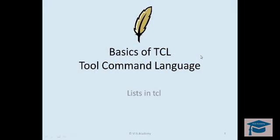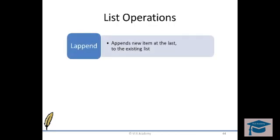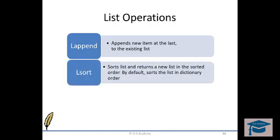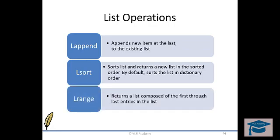Hello everyone, this is the last part of the list series where we will see some more list-related commands in Tcl. Let's begin with lappend — lappend appends a new item to the end of the list; it doesn't create a new list. lsort is a command which sorts items in a specified order and returns a new list. The Tcl shell uses merge sort, which has a complexity of n log n. lrange returns a specified range of items from a list.